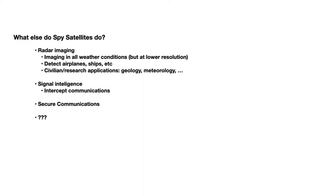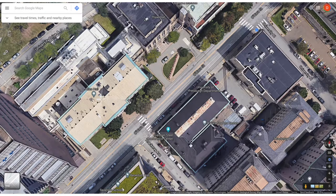There are also spy satellites that do signal intelligence, which means they intercept communications of other countries. Additionally, there are spy satellites used for secure communications. And finally, there are things which are classified and which we don't know about. However, a lot of spy satellite technology is now in wide use in the civilian world.